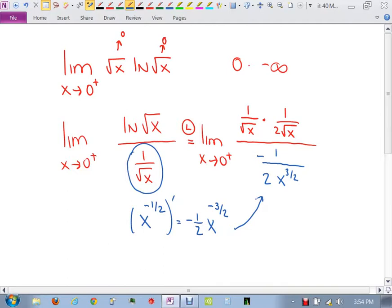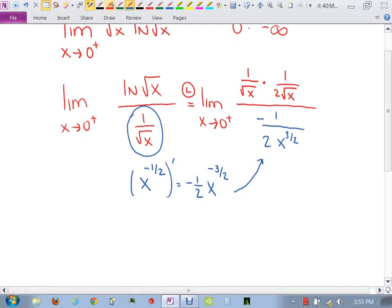What was that numerator? What's 1 over root x times 1 over root x? Because you can multiply those across, right? 1 on top and then 2 times what? It's just 2x. So you have on the top limit, x goes to 0 from the right, 1 over 2x.